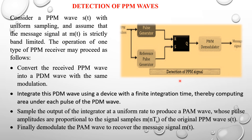This is the block diagram of the PPM detector. It consists of a pulse generator and a reference pulse generator. The pulse generator output and the reference pulse generator output are both applied to an RS flip-flop, where the pulse generator output is connected to the reset pin and the reference pulse generator output is connected to the set pin. The flip-flop output is applied to a Pulse Width Modulation demodulator circuit, which allows us to easily detect the PPM waves.